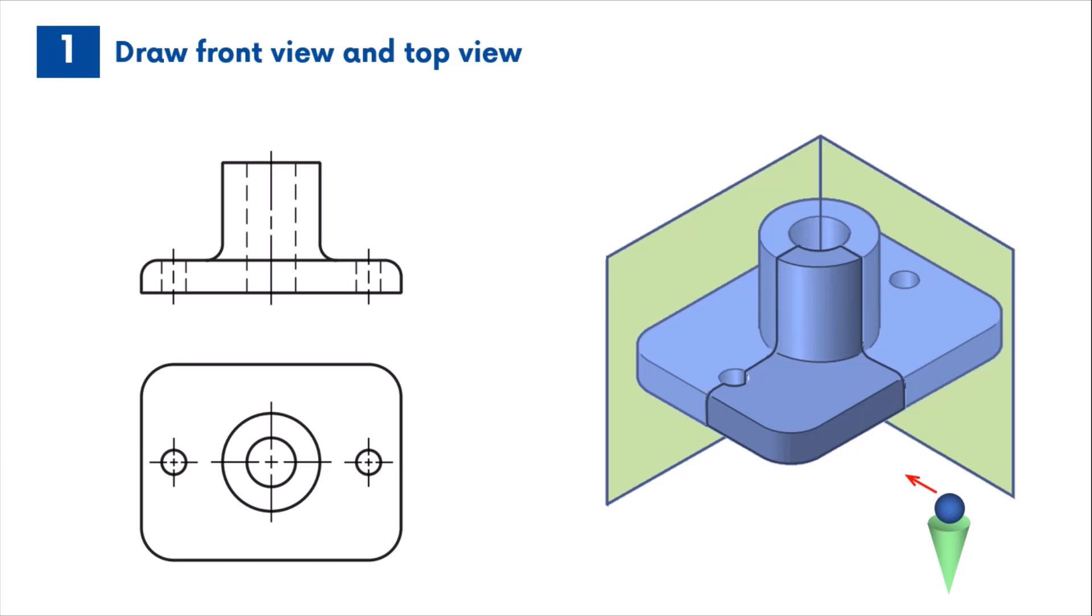The part contains three cylindrical holes which are shown by hidden lines in the front view. Next, we add a cutting plane line in the top view.